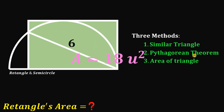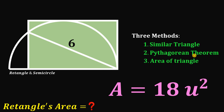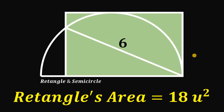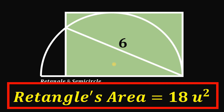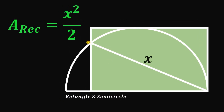Using three different methods, we confirm that the area of this rectangle is 18 square units. Here is the shortcut: the area equals 6² divided by 2, which is 36 divided by 2 = 18. In general, if the length of this segment is x, then the area of the rectangle is x² over 2. My challenge to you: can you prove this formula? Leave your answer in the comments below!